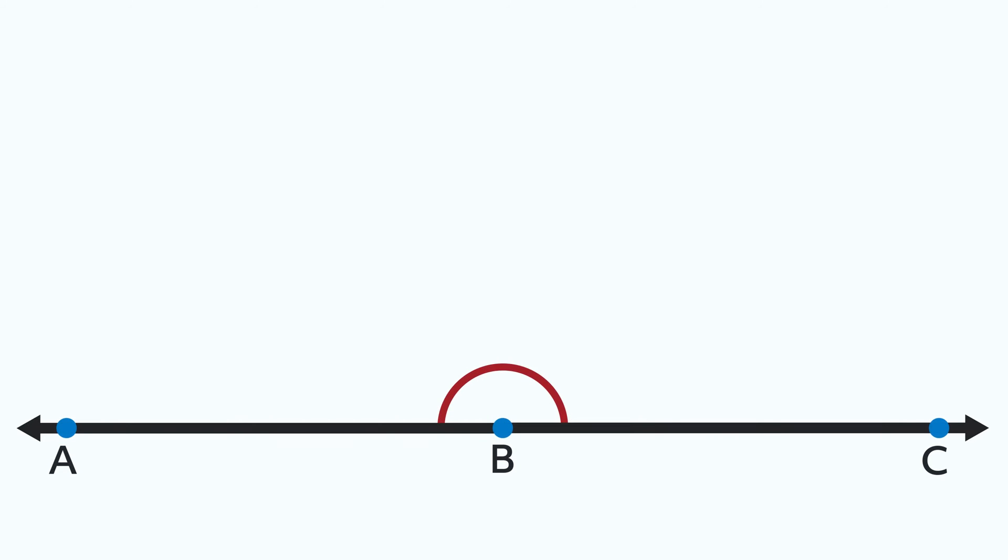When it's drawn like this, we can see that angle ABC does exist and has a measure of 180 degrees. This is a useful thing to know because we'll need it to understand linear pairs later on.